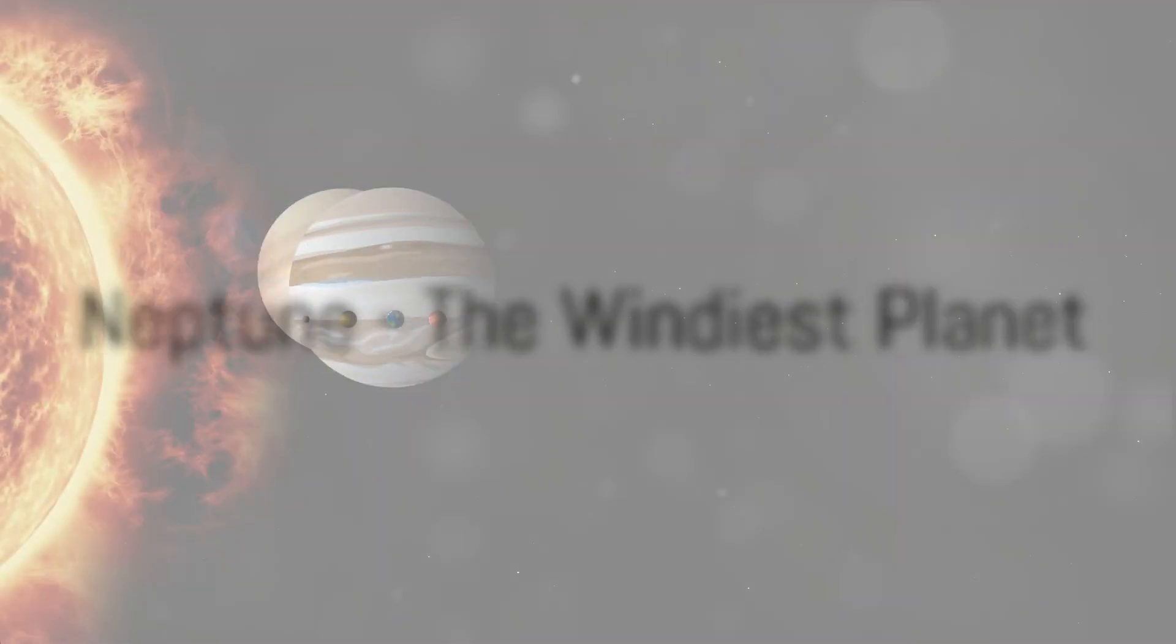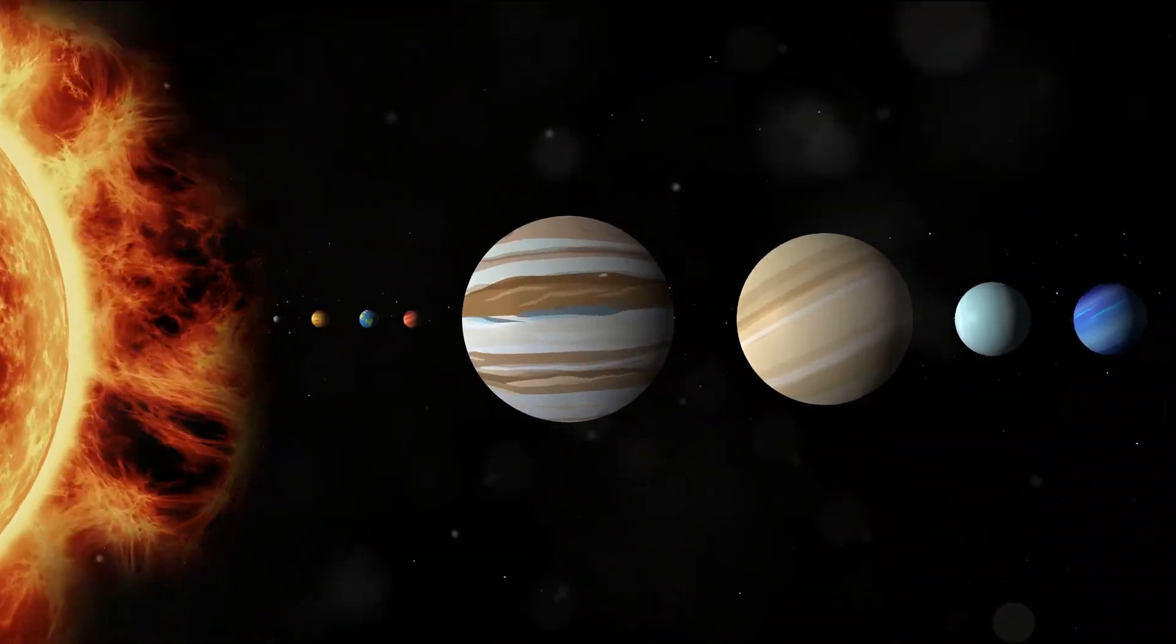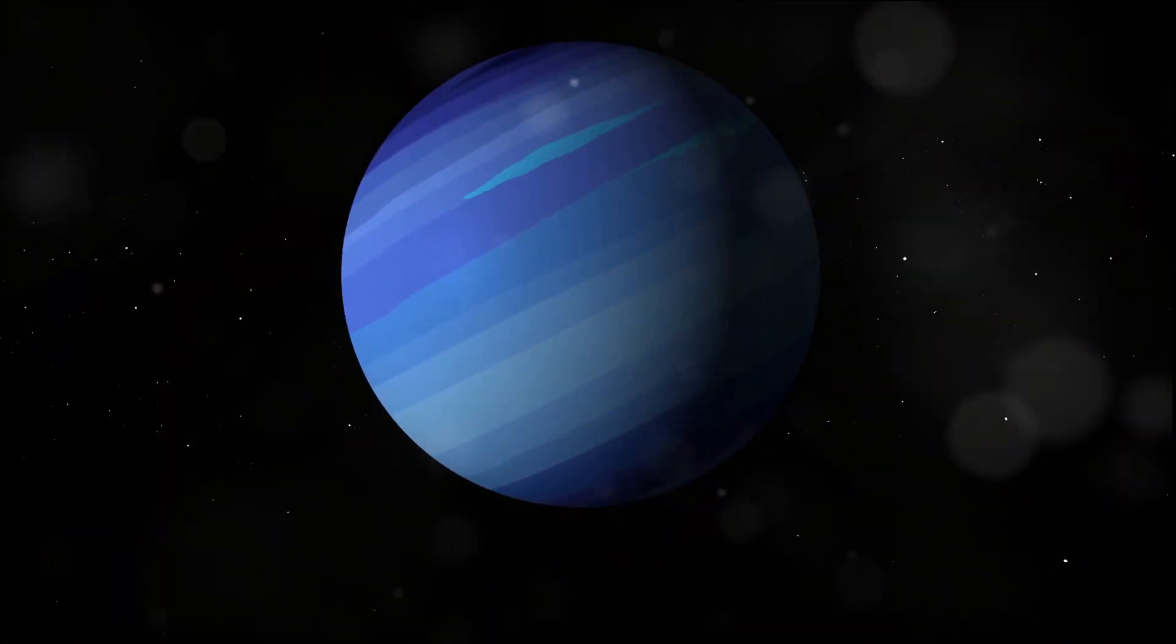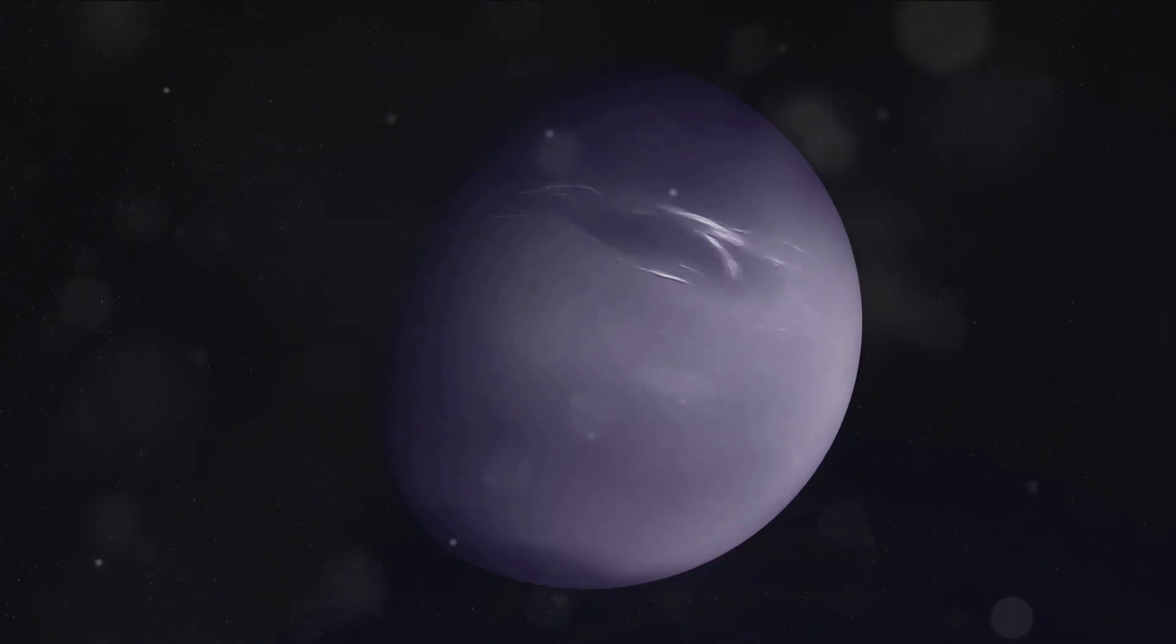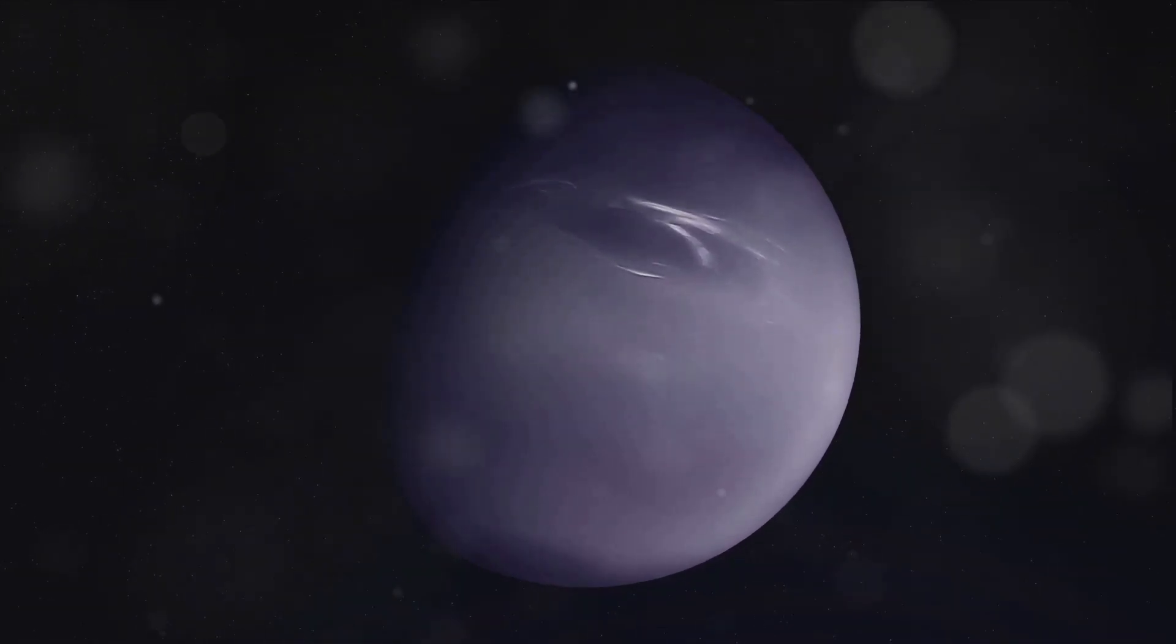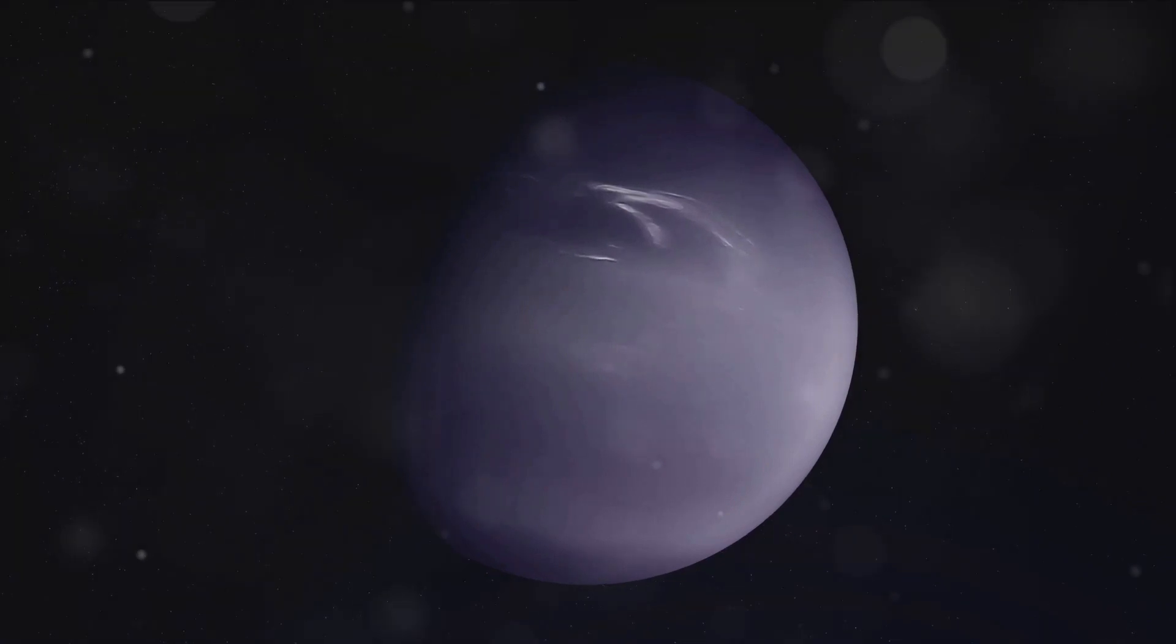Neptune, the last of the traditional planets, holds the title for the windiest planet. Its winds, the fastest in the solar system, barrel at speeds surpassing 1,200 miles per hour. This blue behemoth owes its unique hue to atmospheric methane, a testament to the tempestuous climate of massive storms and high-speed winds it nestles within.